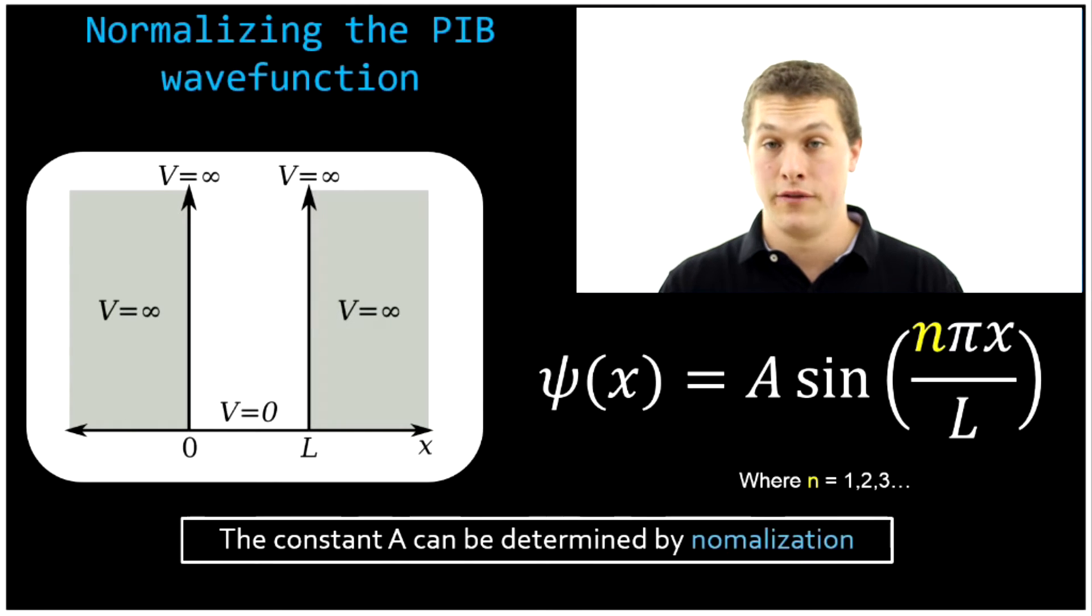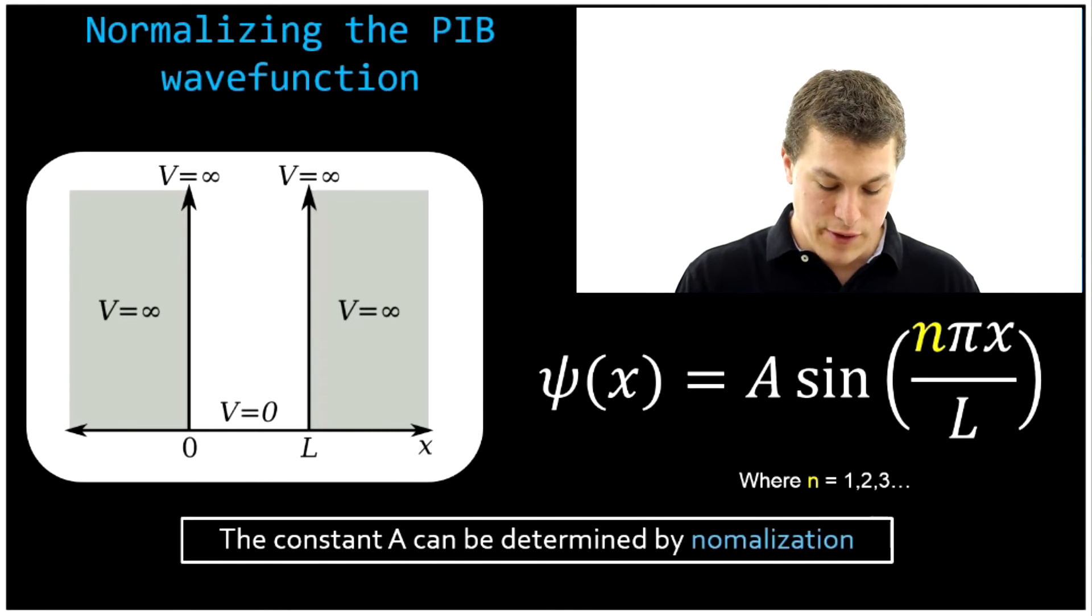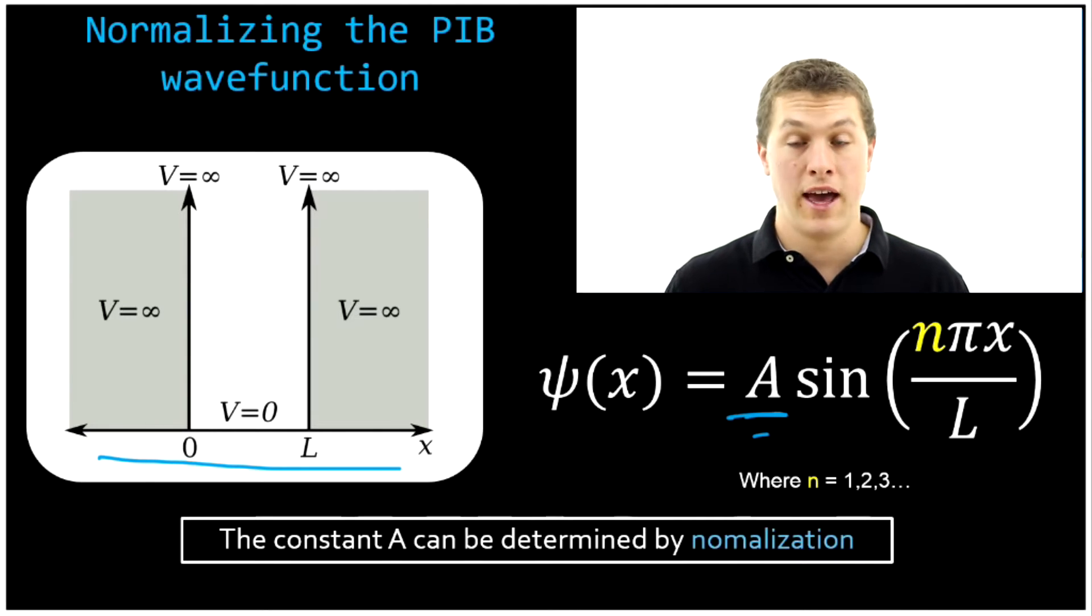So you might have finished the derivation for your particle in the box, and after taking into account this potential, where you have those infinite walls and then no potential in the middle of the box, you get this wave function. And you still don't know the value of A.